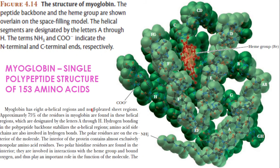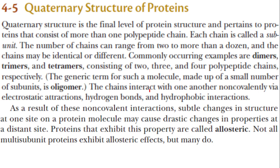This is the structure of myoglobin, which we saw earlier in the first slide of this class. This shows the different parts of the polypeptide chain coming together because of different types of attractions. Now we are moving on to the quaternary structure.